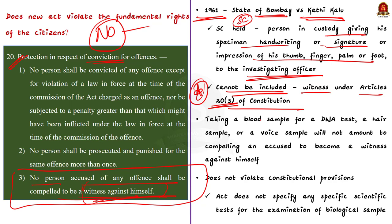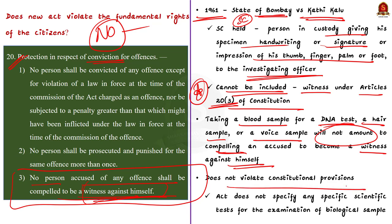Similarly, it has been held in a series of cases that taking a blood sample for a DNA test, a hair sample or a voice sample will not amount to compelling an accused to become a witness against himself, because such samples are innocuous and do not convey information within personal knowledge of the accused. Thus, the constitutionality of collecting biological samples or other measurements for facilitating investigation has been settled since long. Taking any sample or measurements for the purpose of identification or comparison would not automatically breach any constitutional provisions, as the act does not specify any specific scientific test for the examination of biological samples.